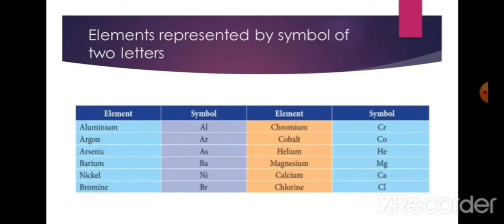Elements represented by a symbol of two letters: when there is more than one element that begins with the same letter, the symbol takes two letters. The first letter is capitalized while the second letter is lowercase. For example, hydrogen is represented by H and helium by He. The symbol for carbon is C, while calcium is Ca, chlorine is Cl, and chromium is Cr.